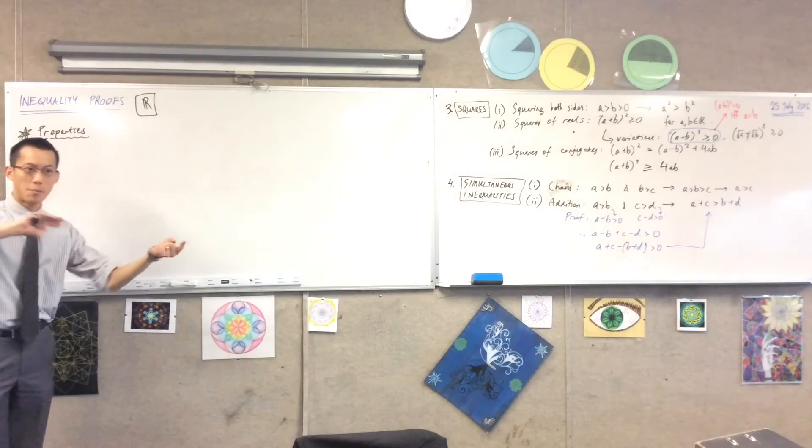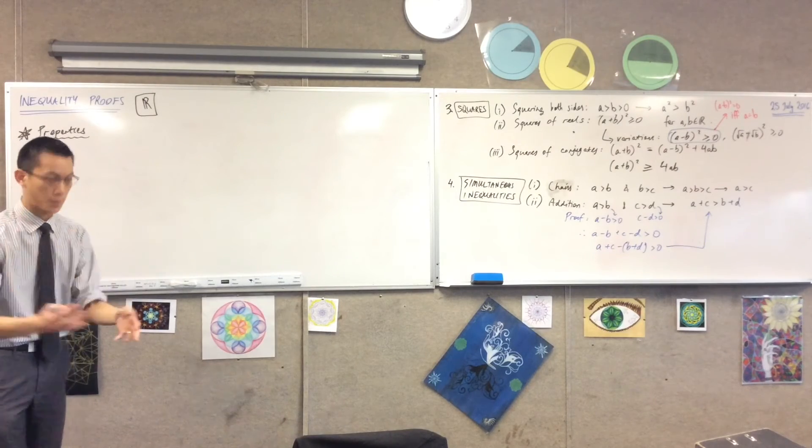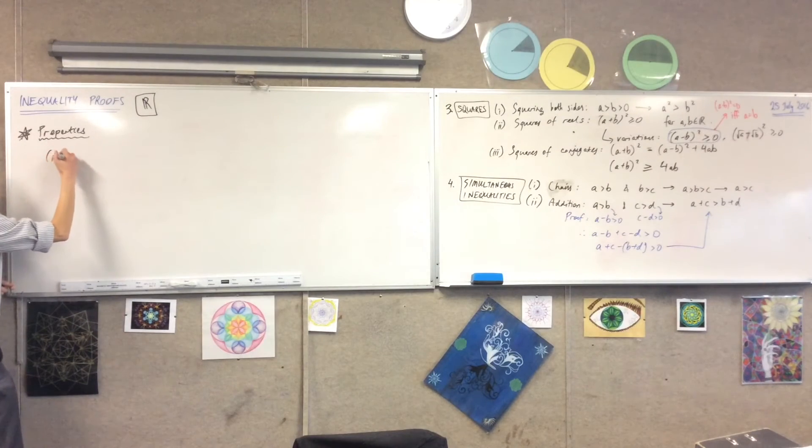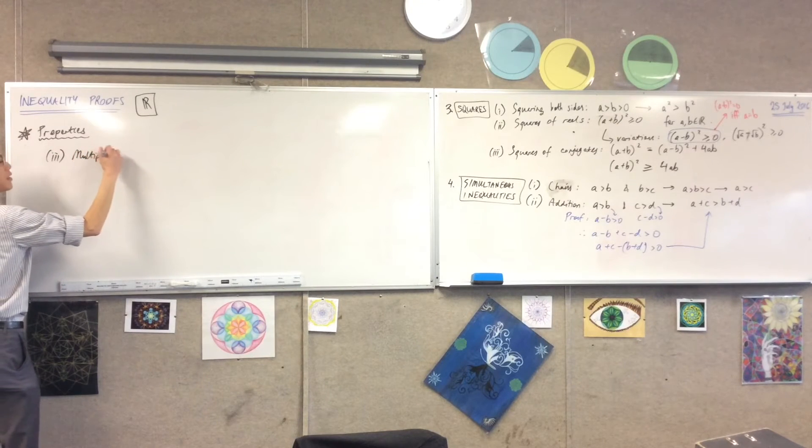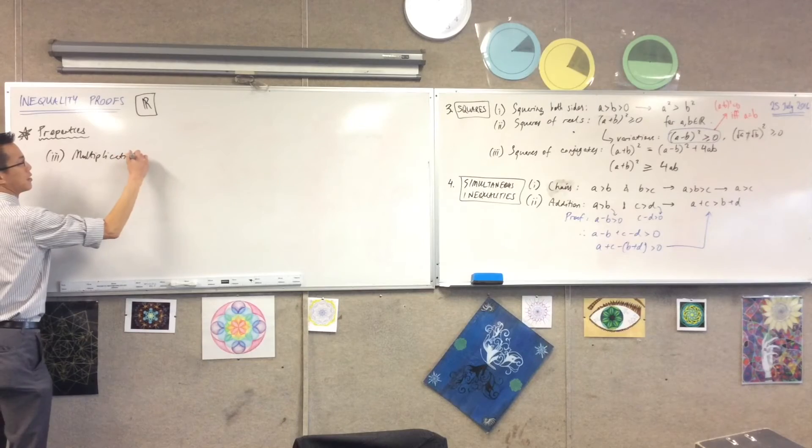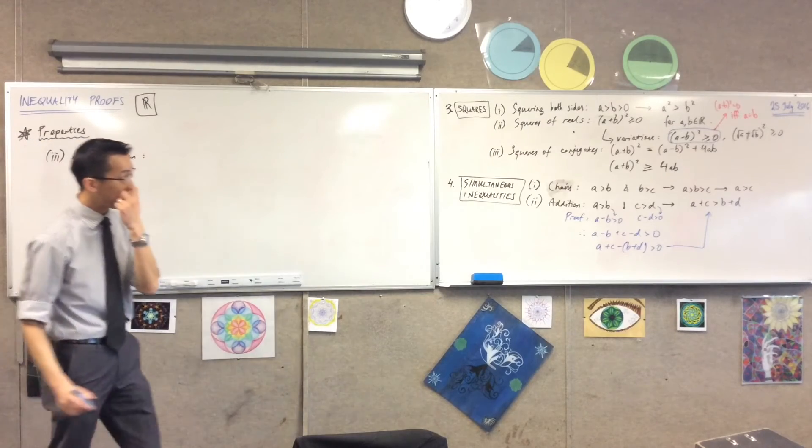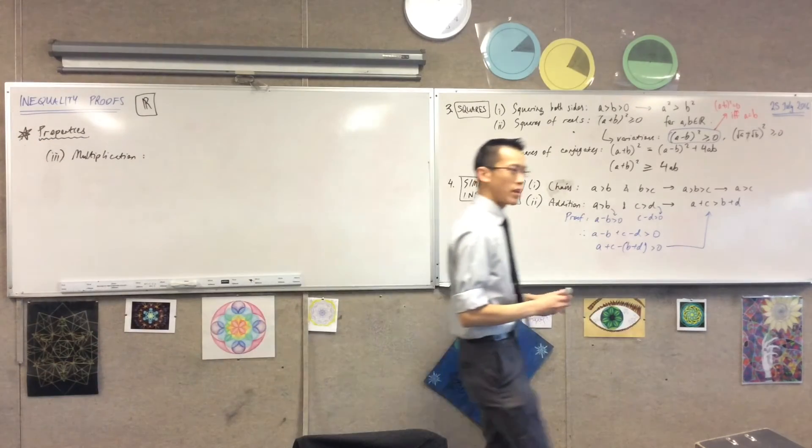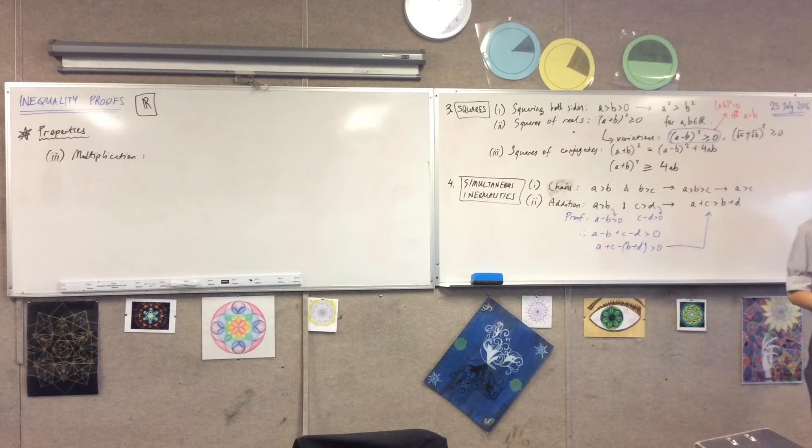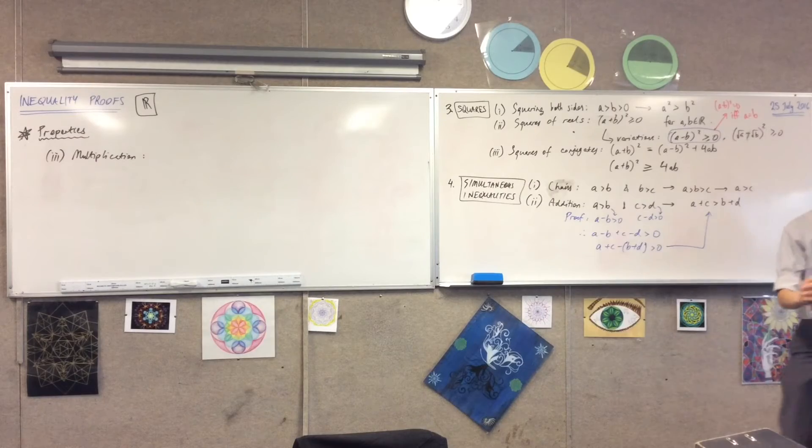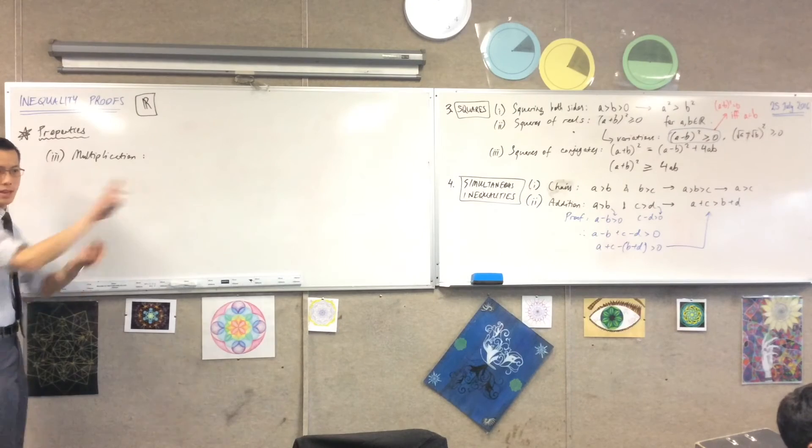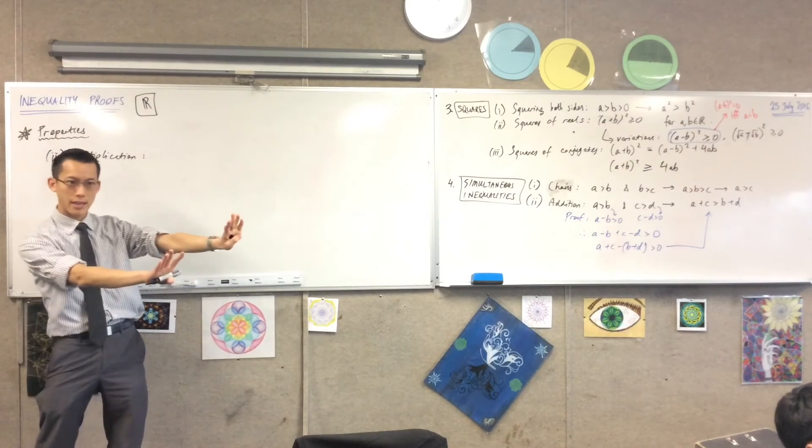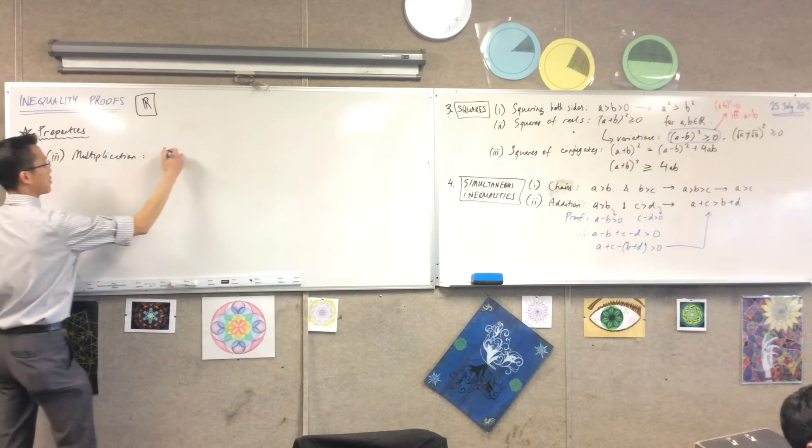Alright, now I said we can combine by addition. You can also combine by multiplication. So this is still under simultaneous inequalities. So if what I'm doing is I'm multiplying together. In the same way as when I was looking at constants, you have to sort of worry about whether things are positive or negative. So just to keep things simple, I'm just going to stay in positive land because that's where things are easiest to see.